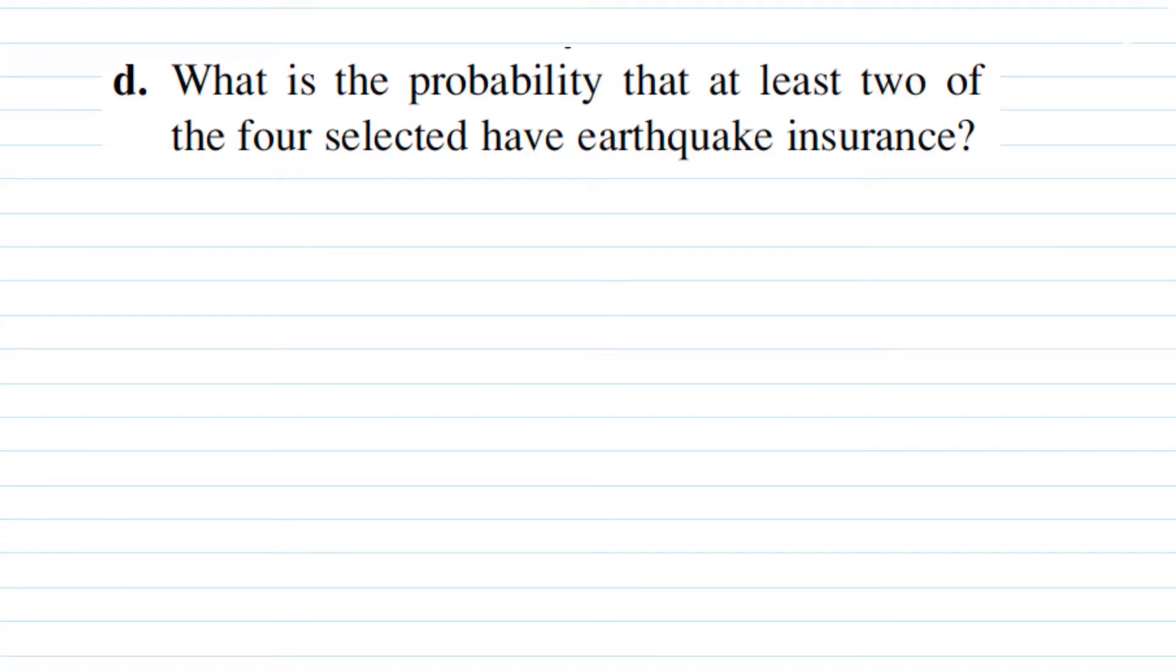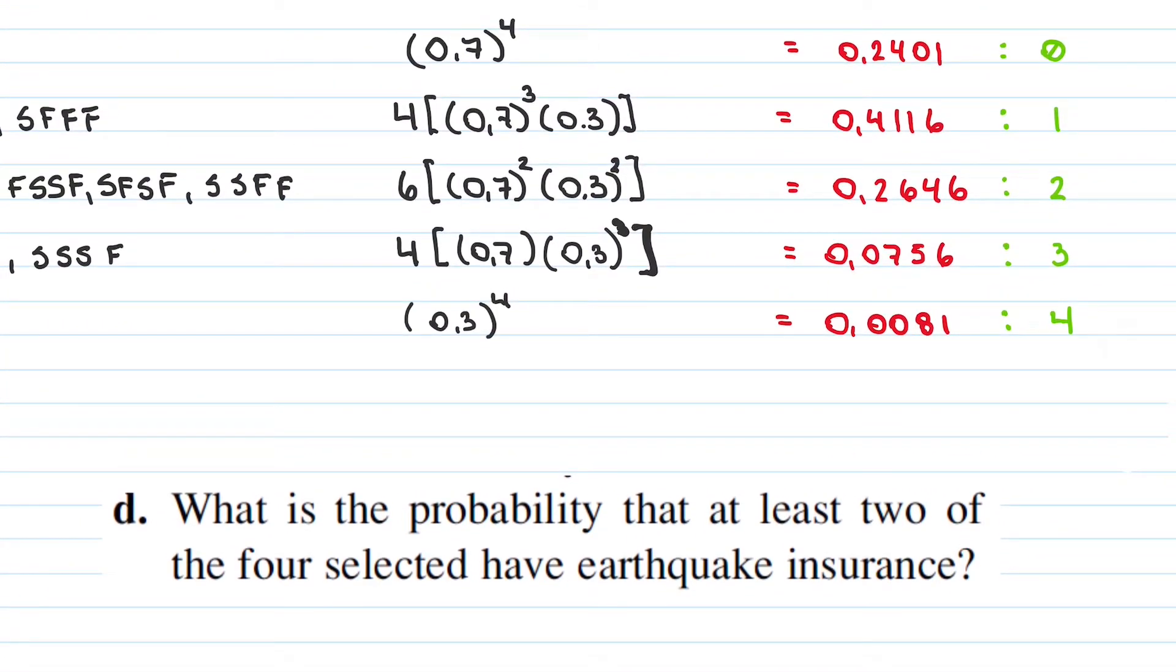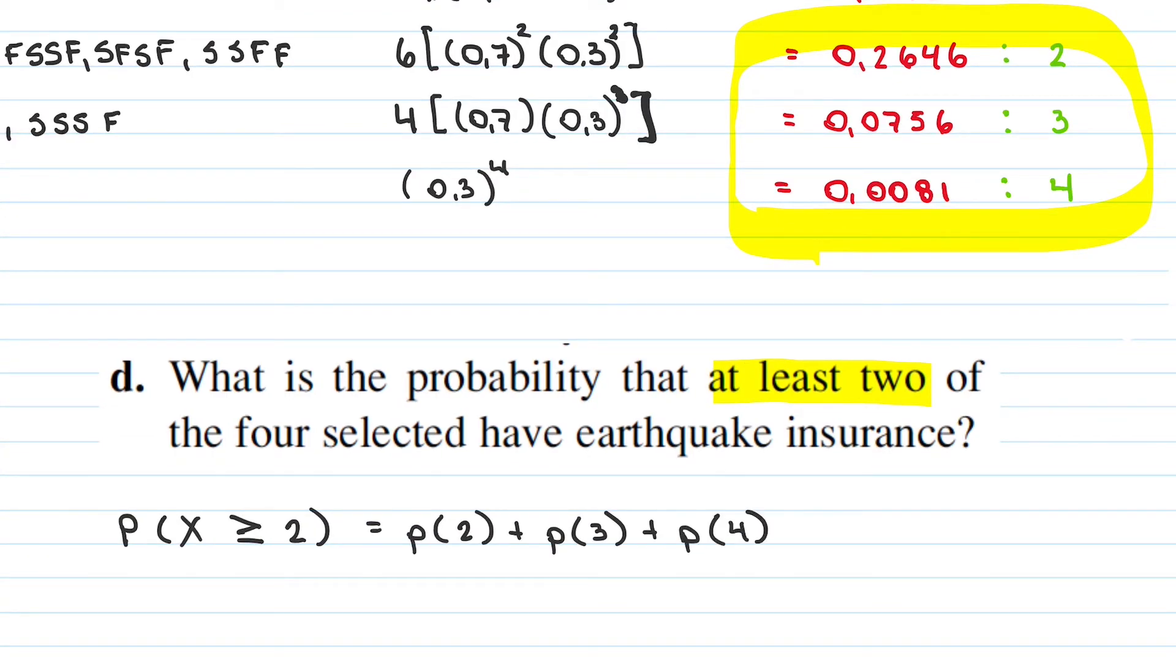Part D, what is the probability that at least 2 of the 4 selected have earthquake insurance? Once again, we have to work with our previous distribution table, where we can get the distribution for 2 or more insured houses. Finally, the probability for X greater or equal than 2 is the addition of the probabilities for 2, 3 and 4 insured houses.